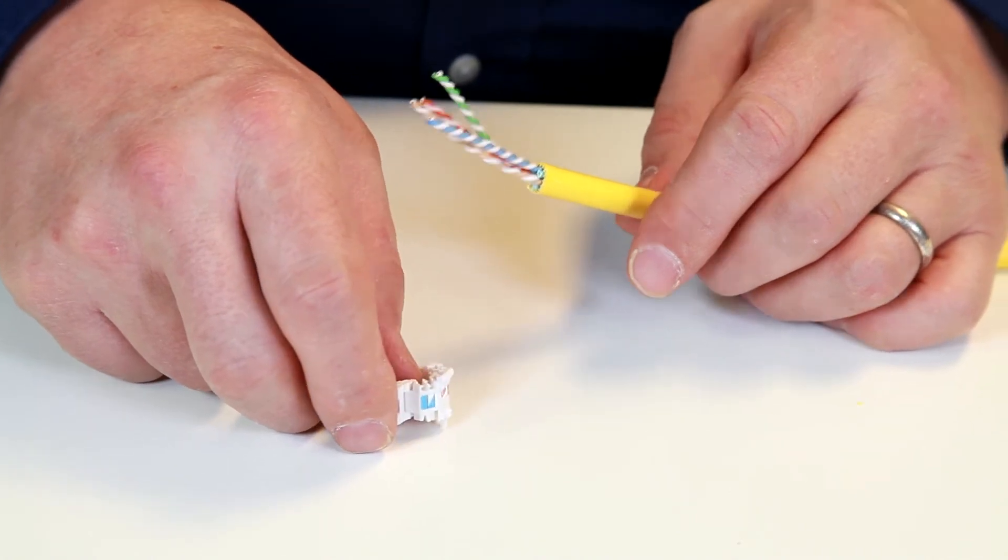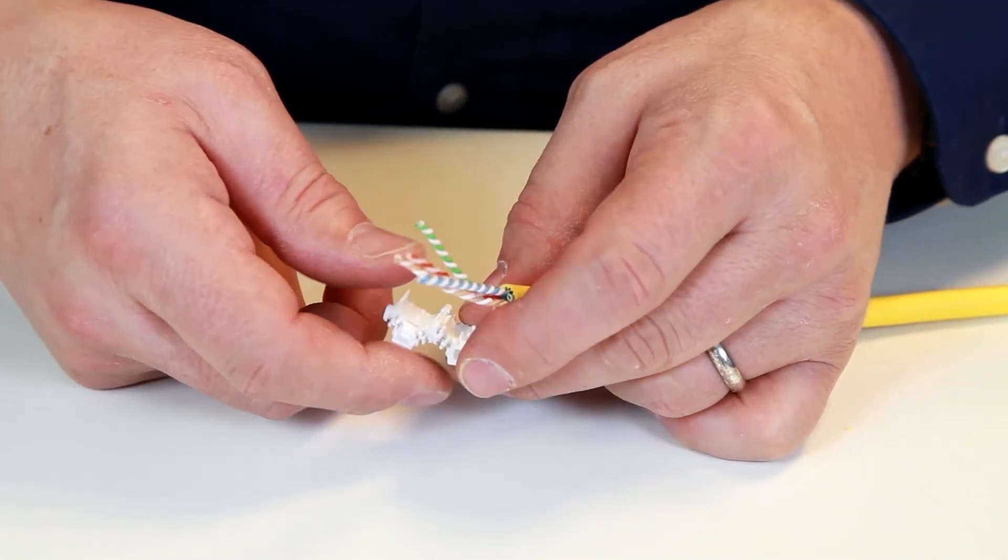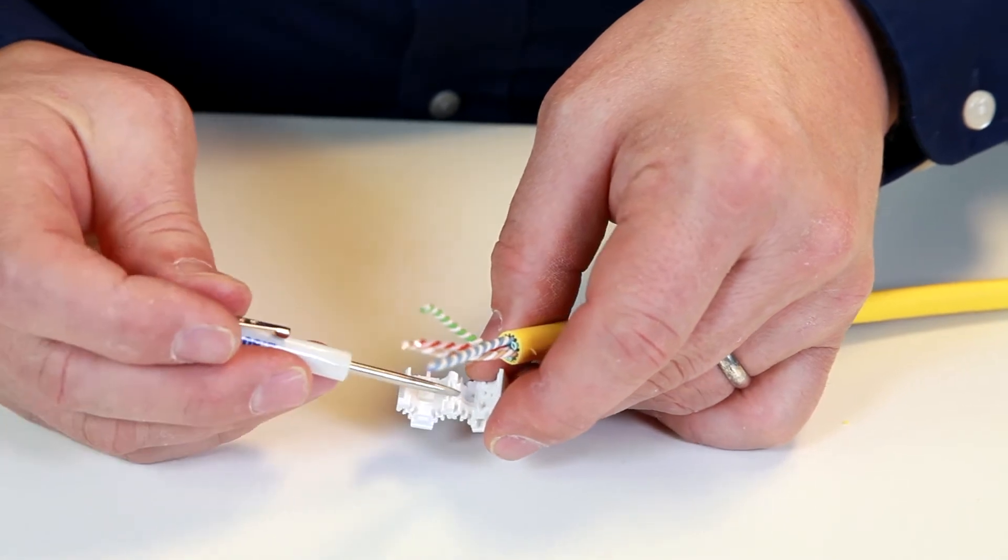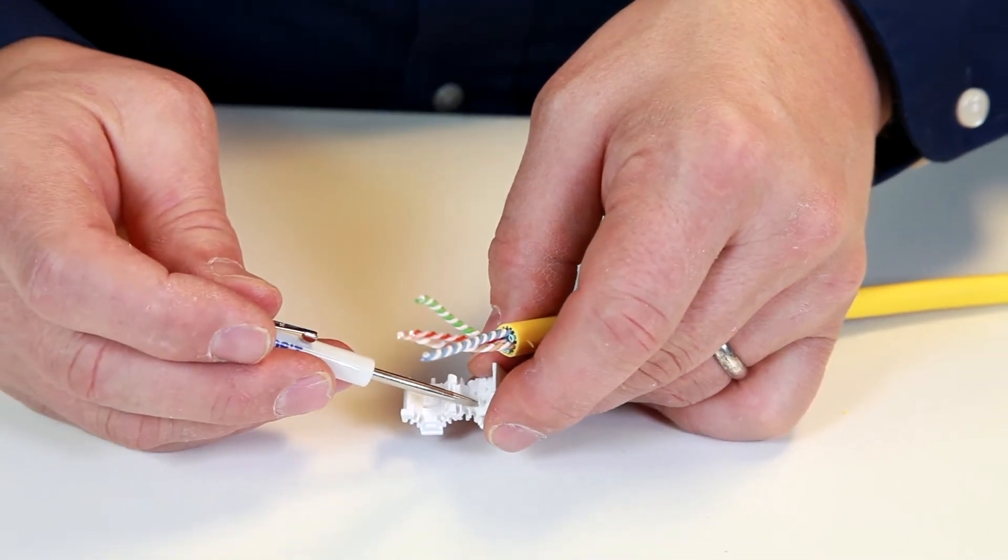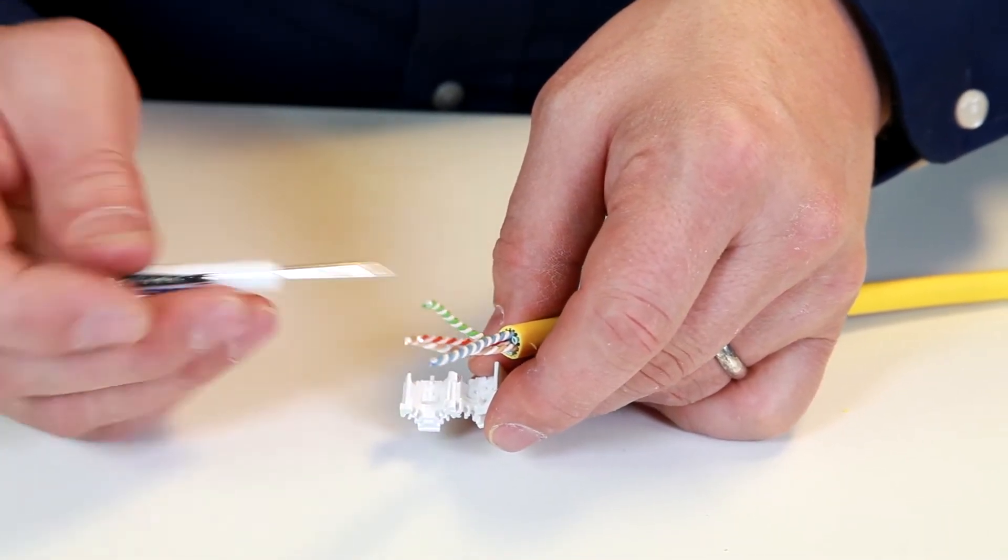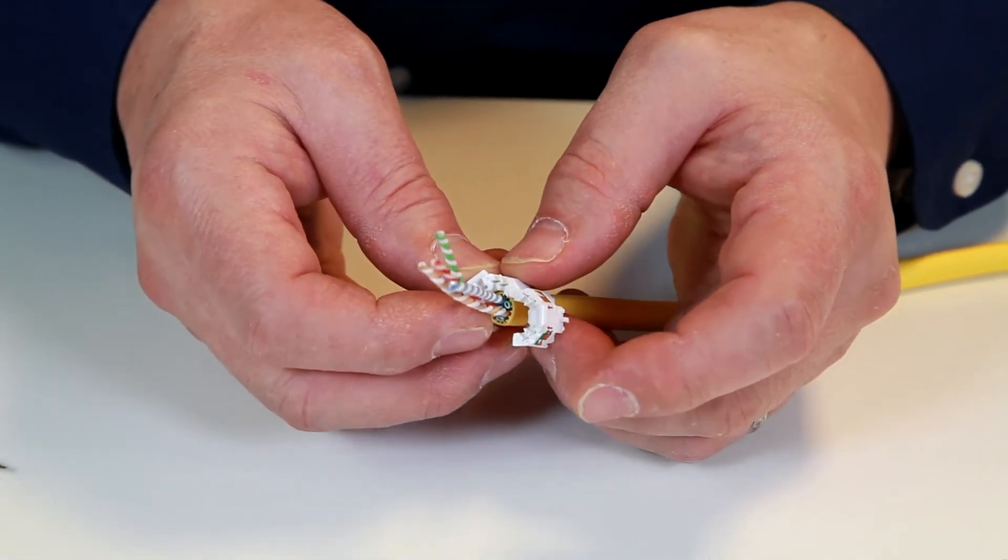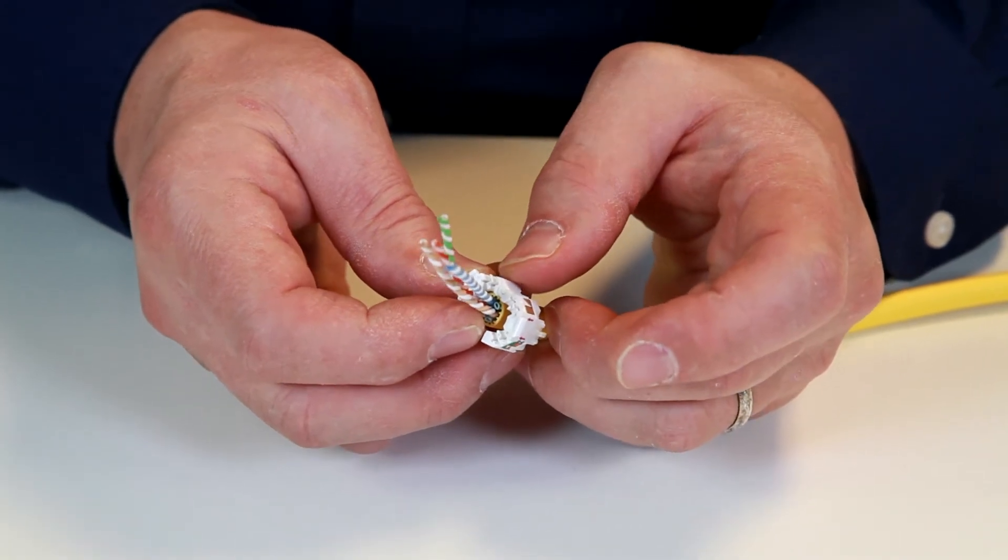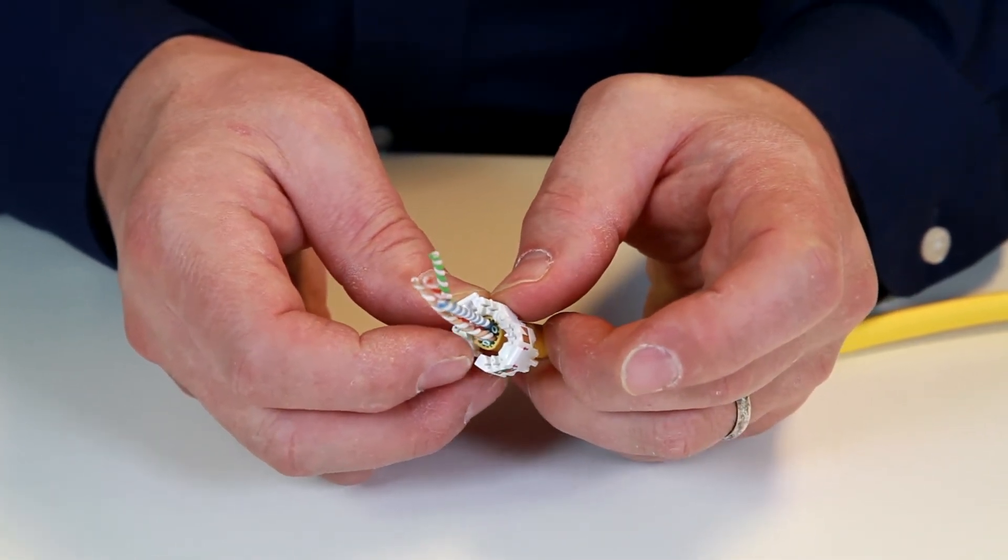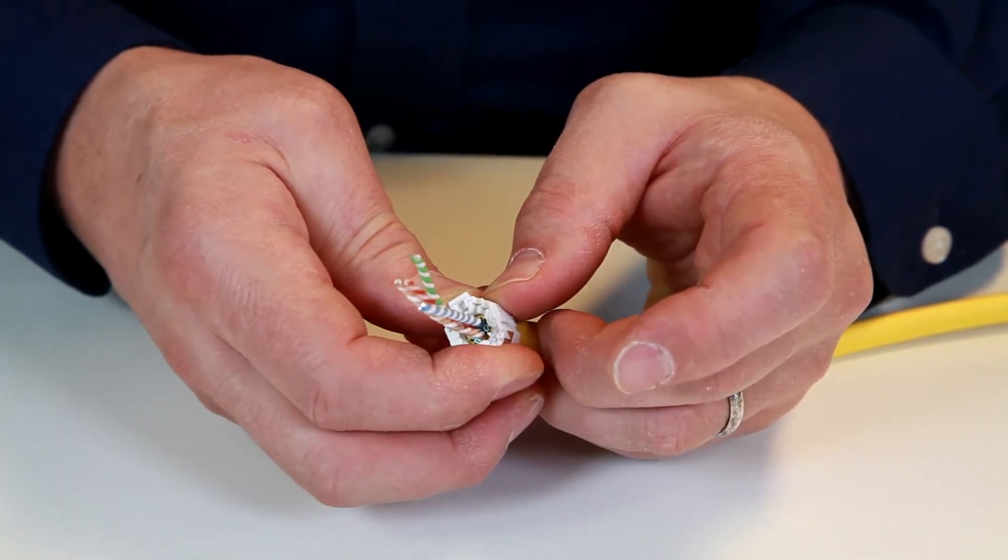Also inside the wire manager there is a cable stop right here, and the strip point of the cable jacket goes right at that stop. We'll line up the blue pair with the blue label, blue part of the label. Put the cable stop right down to the cable strip point and snap the wire manager closed.